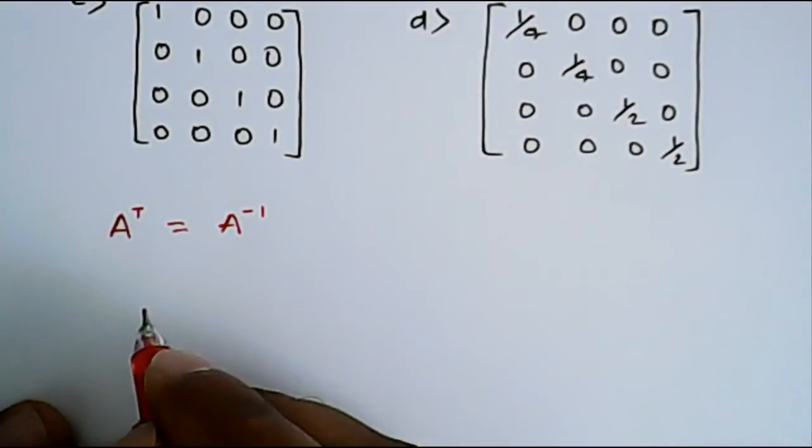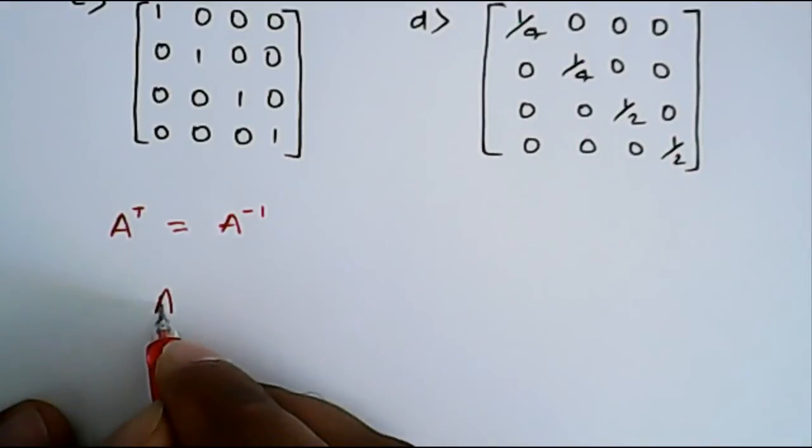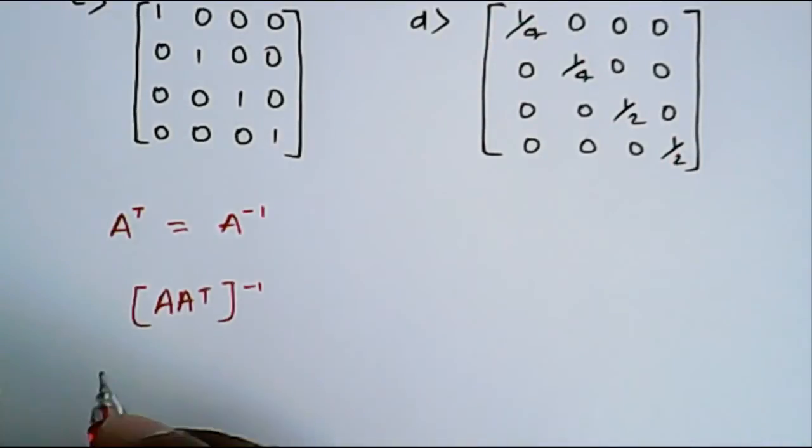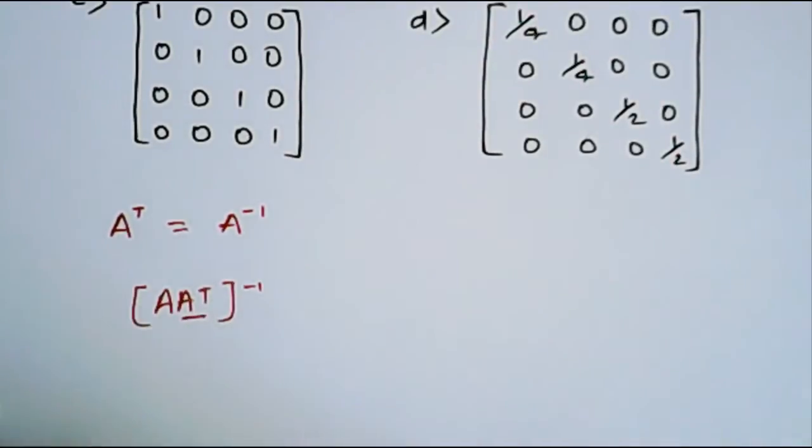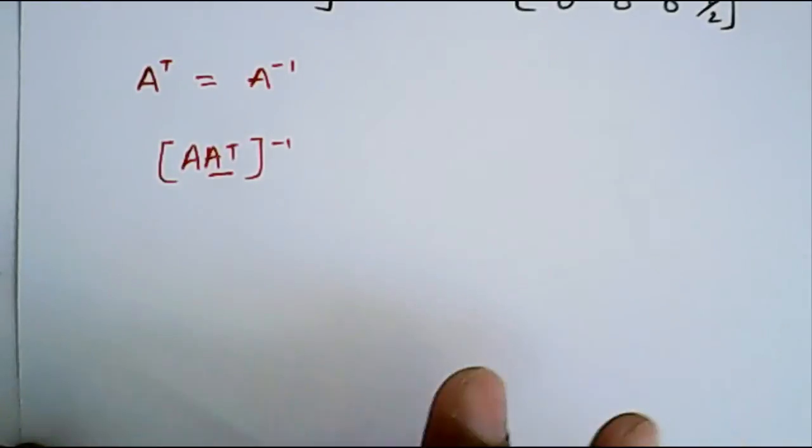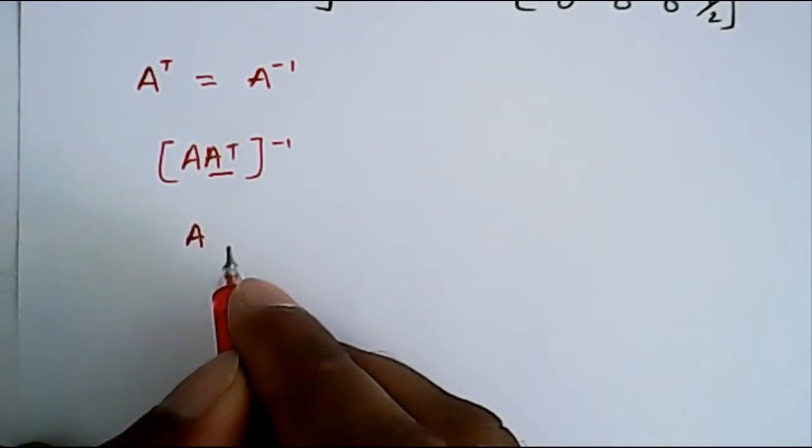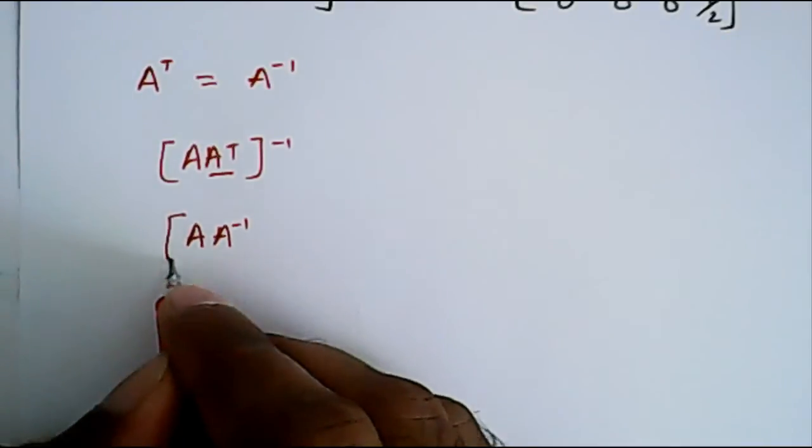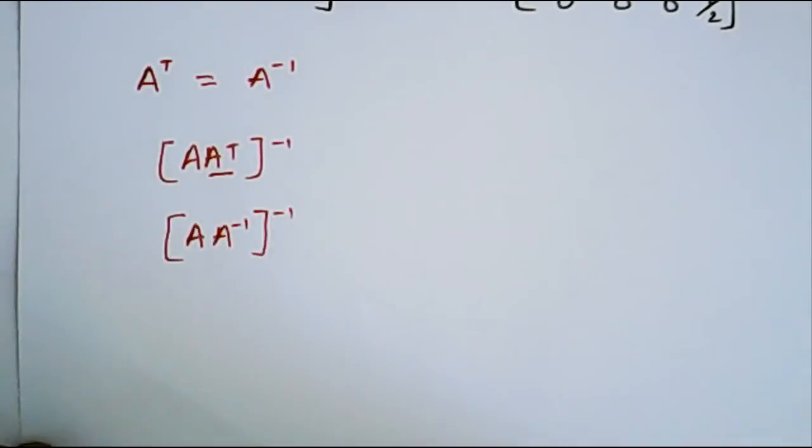Now what we have been asked? We have been asked [AA^T]^(-1). So now this A^T is equal to, if you replace this A^T it will become A and this will become A^(-1), and then whole inverse.